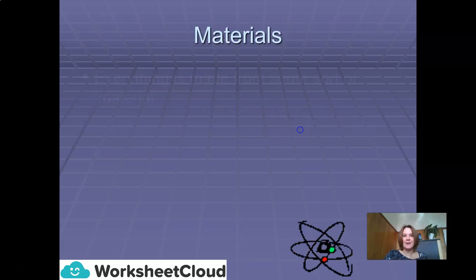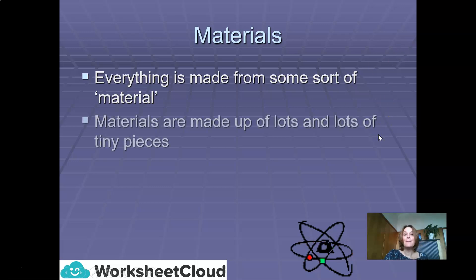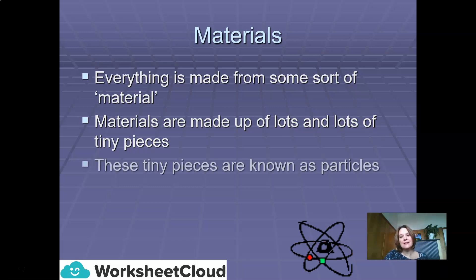Materials. Everything is made from some sort of material. Look around you right now. The chair you're sitting on, the desk you're at, the computer that you may be watching this lesson from. It is made from some sort of material. Materials are made up of lots and lots of tiny pieces. These tiny pieces are known as particles.